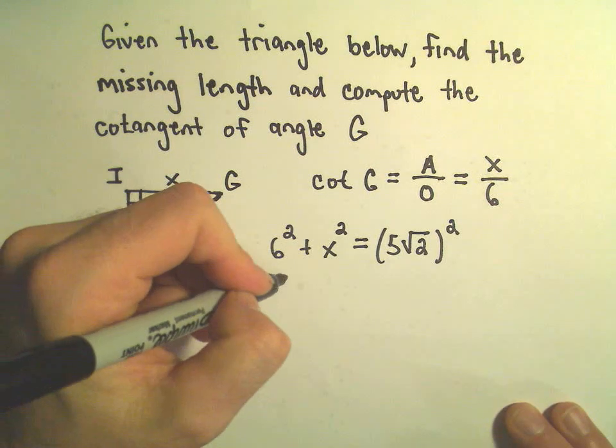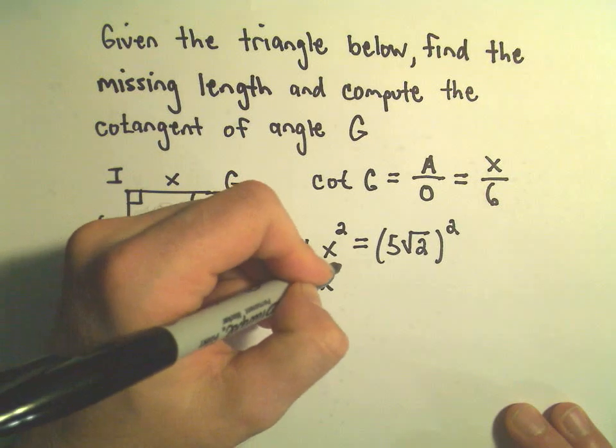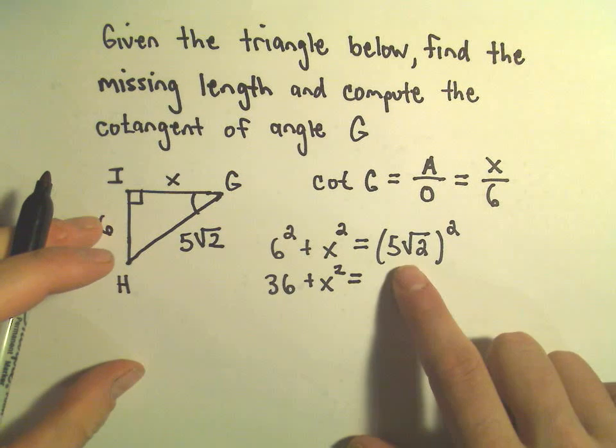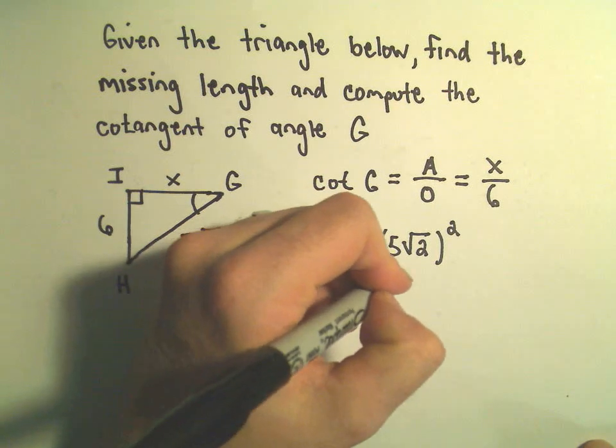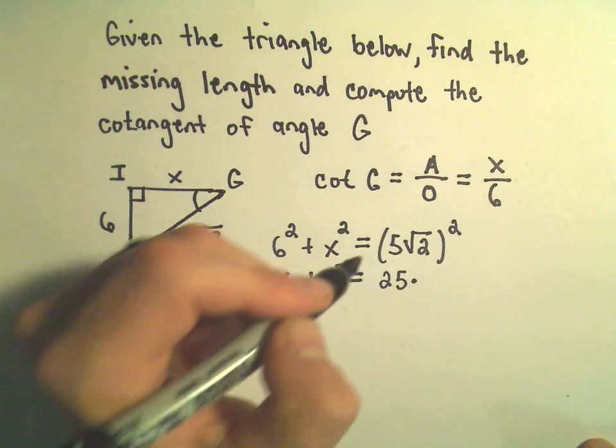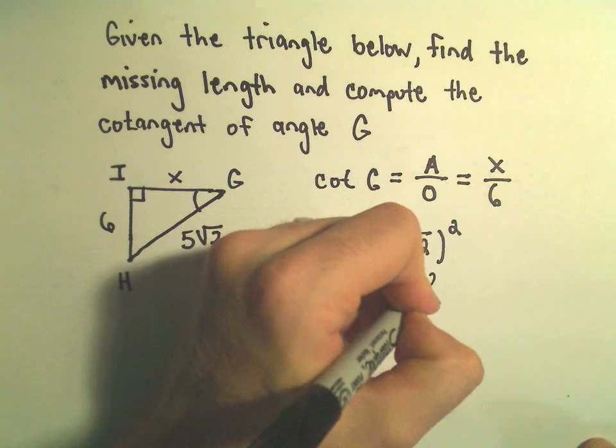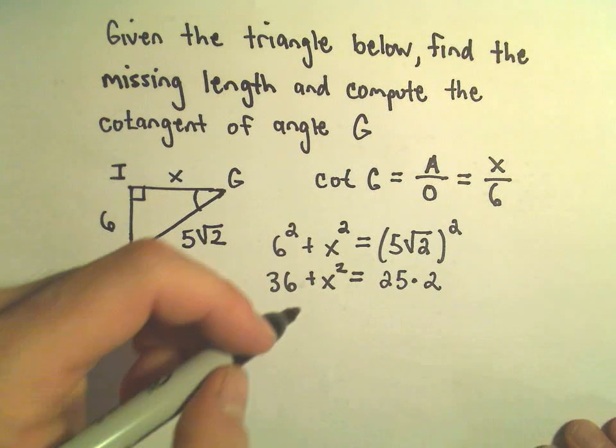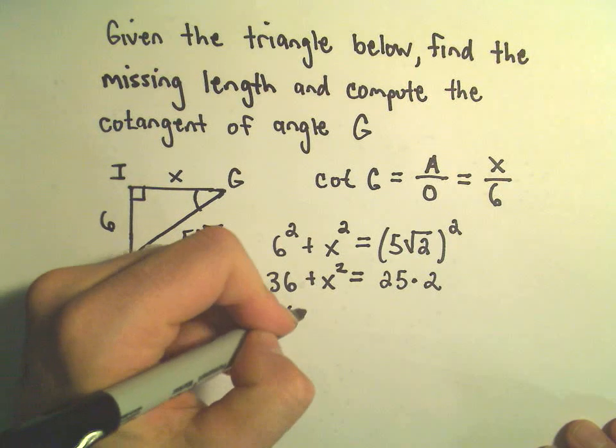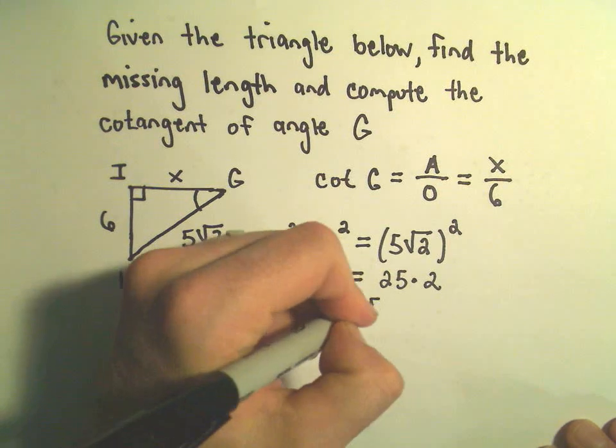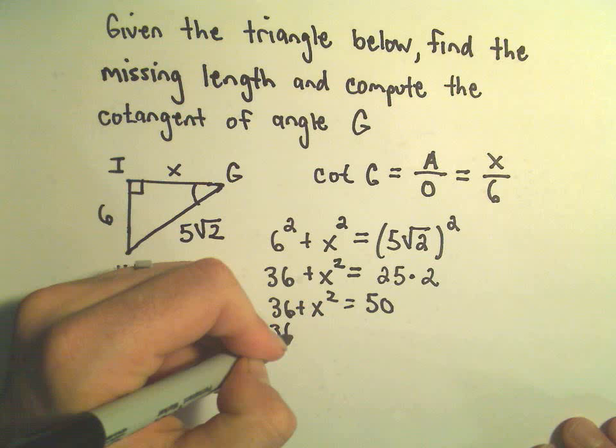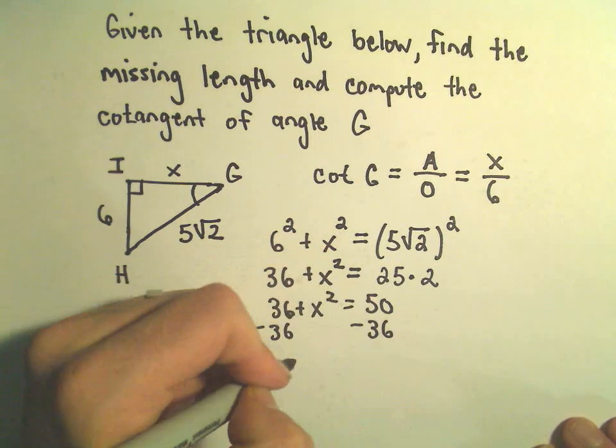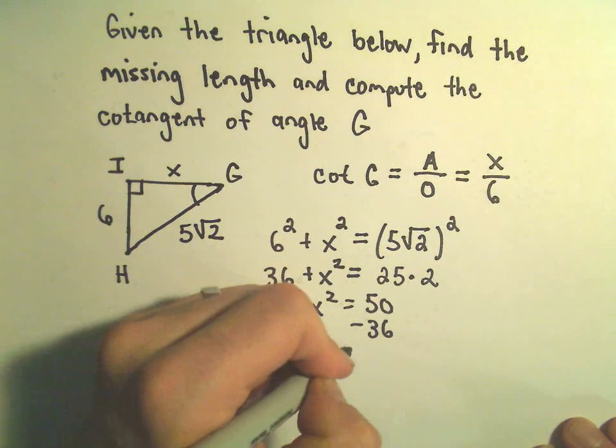6 squared is just 36. 5 times square root of 2 squared, we've got to square each part. So 5 squared will be 25. The square root of 2 squared is just going to be 2. So really we've got 36 plus x squared equals 50. We can subtract 36 from both sides. That's going to give us x squared equals 14.